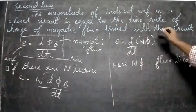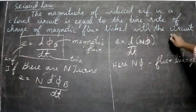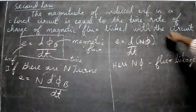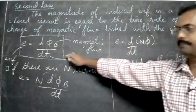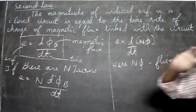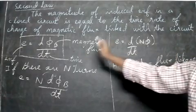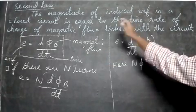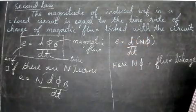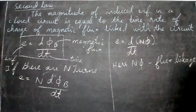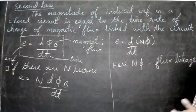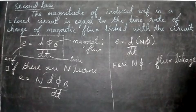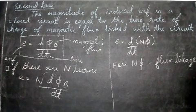Go through the second rule carefully. It's enough to write E is equal to dΦB by dT — write the equation and the rules. This is a very important rule — the first law and the second law. Go through carefully. Thank you for watching.